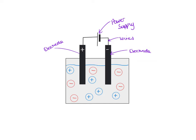They could be drawn either way around, so just make sure you're aware which one is which. They've got special names as well: the positive electrode is known as the anode, and the negative electrode is the cathode. The anode and cathode are both dipped into a solution or liquid. Here I've tried to show some sort of solution or liquid — that's known as the electrolyte — and it'll be some sort of ionic compound.